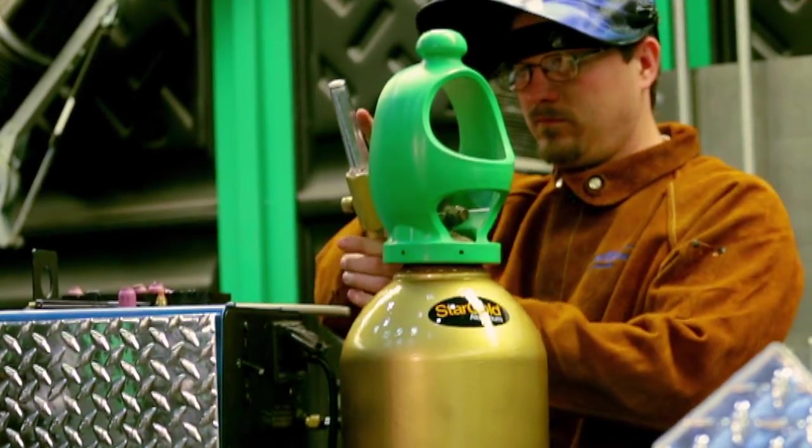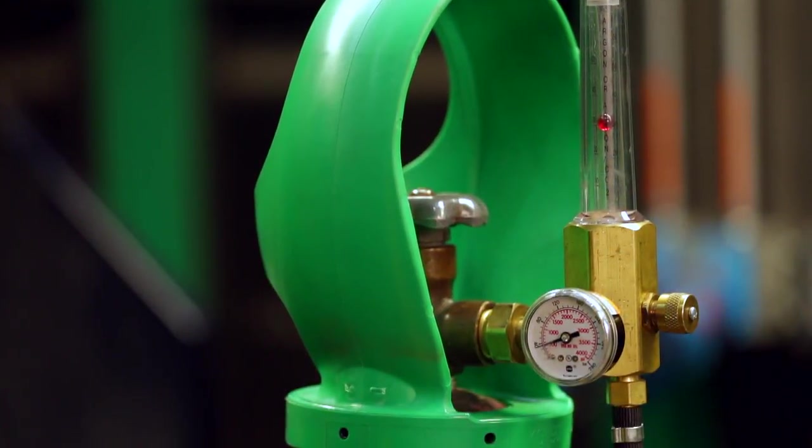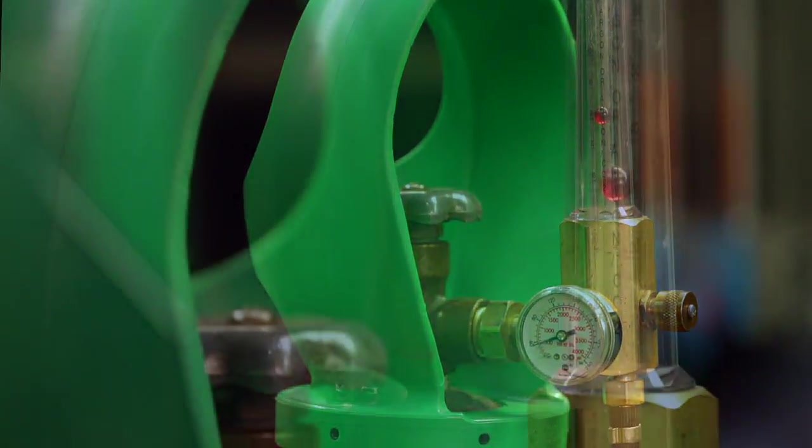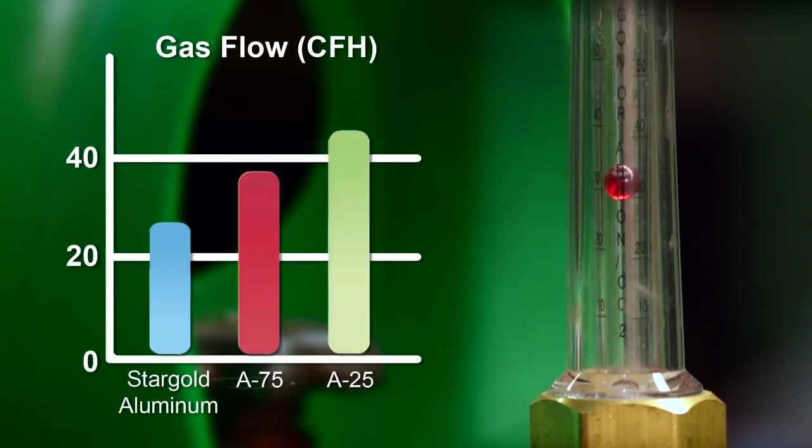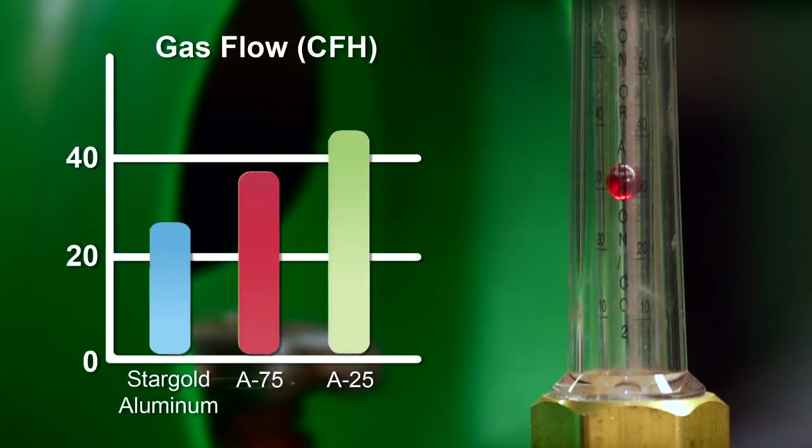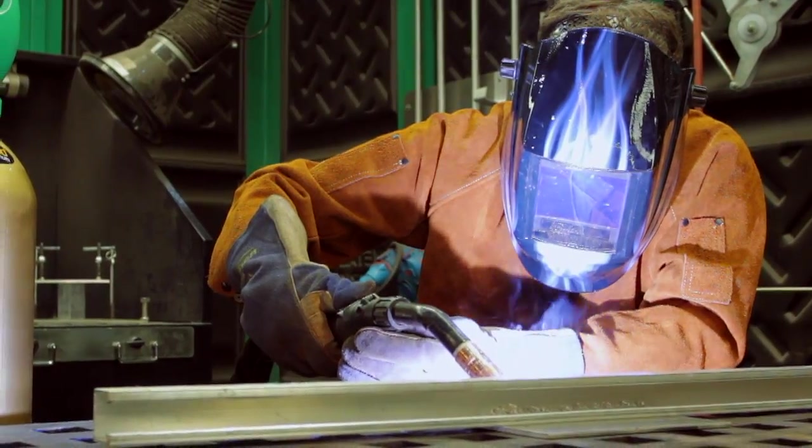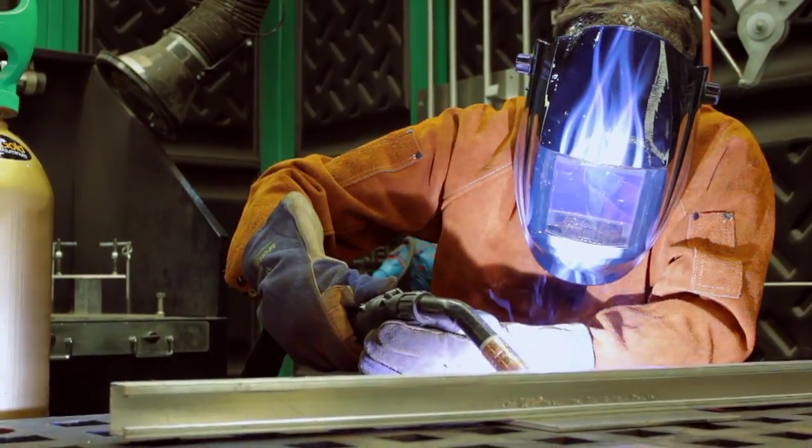Being an argon-based shielding gas, Stargold Aluminum can be used at lower gas flow rates than argon-helium blends while achieving similar performance. Lower gas consumption means fewer cylinders are needed and less cylinder handling is required.